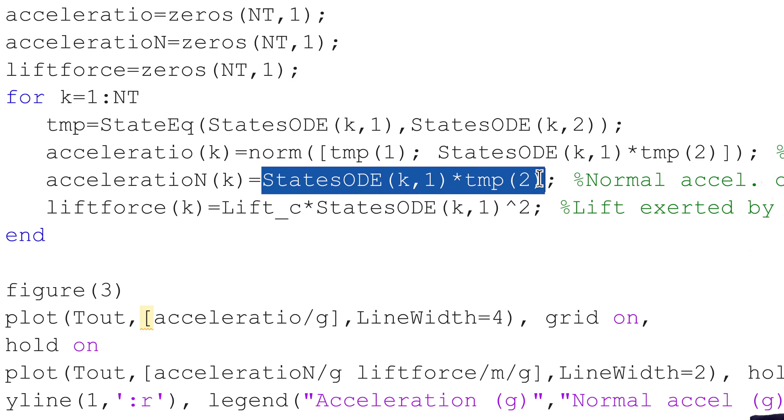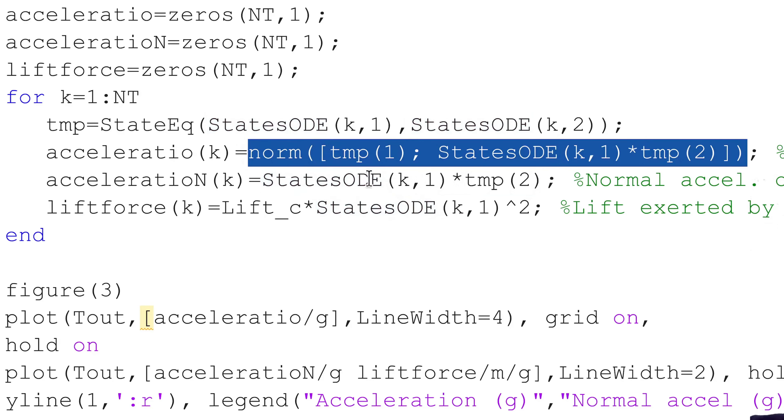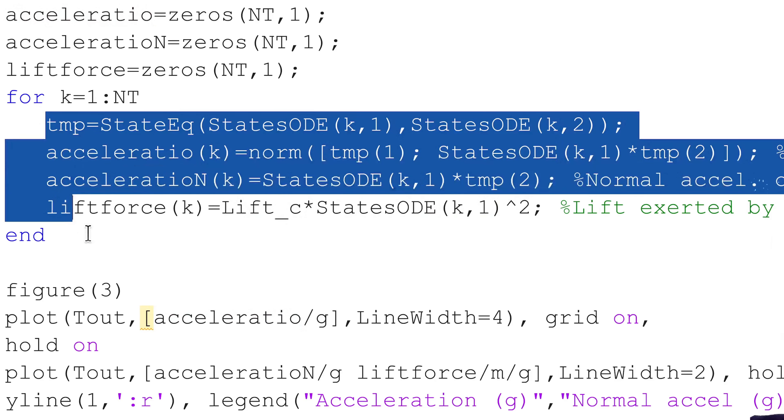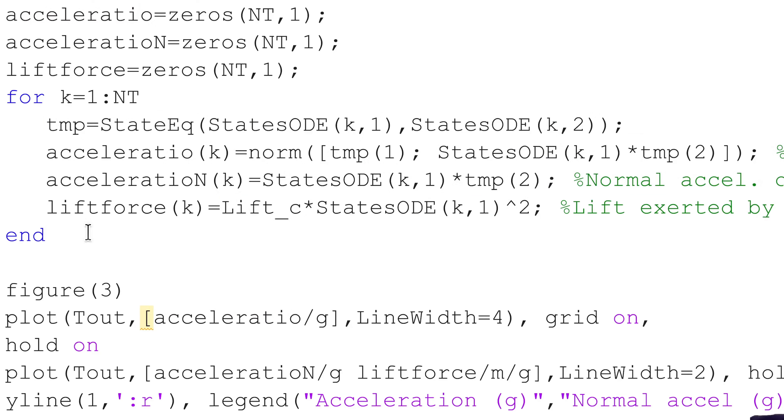So, if I store this, I will get only the normal acceleration. And if I store the whole acceleration vector's norm, then I will get the acceleration in a plot. Also, the lift provided by the wings is just the airspeed, first simulated state, squared, times the lift coefficient. So, with this, I can plot those accelerations.